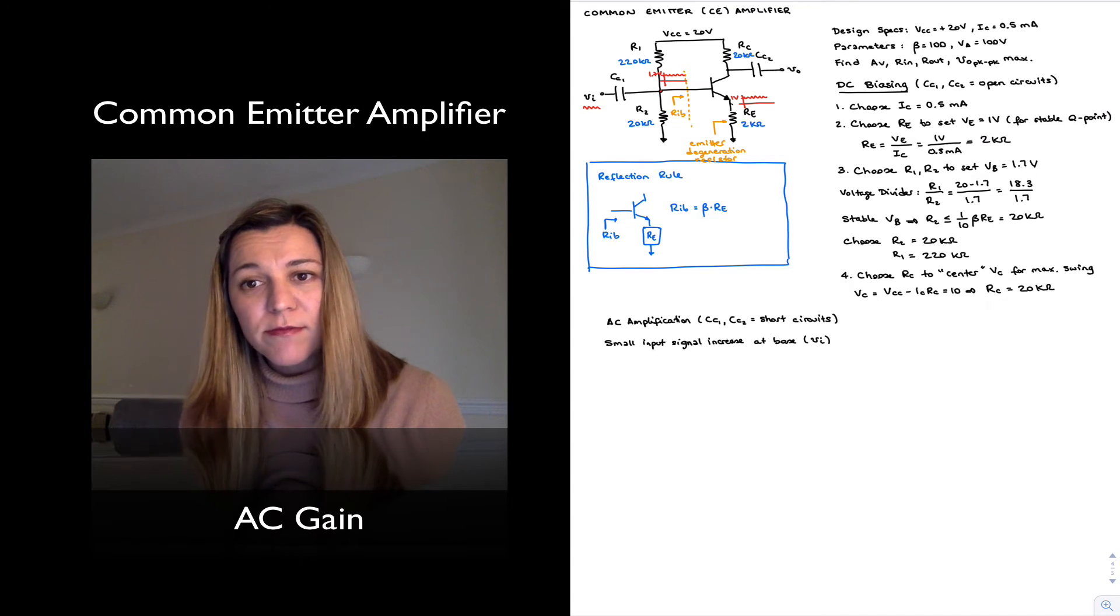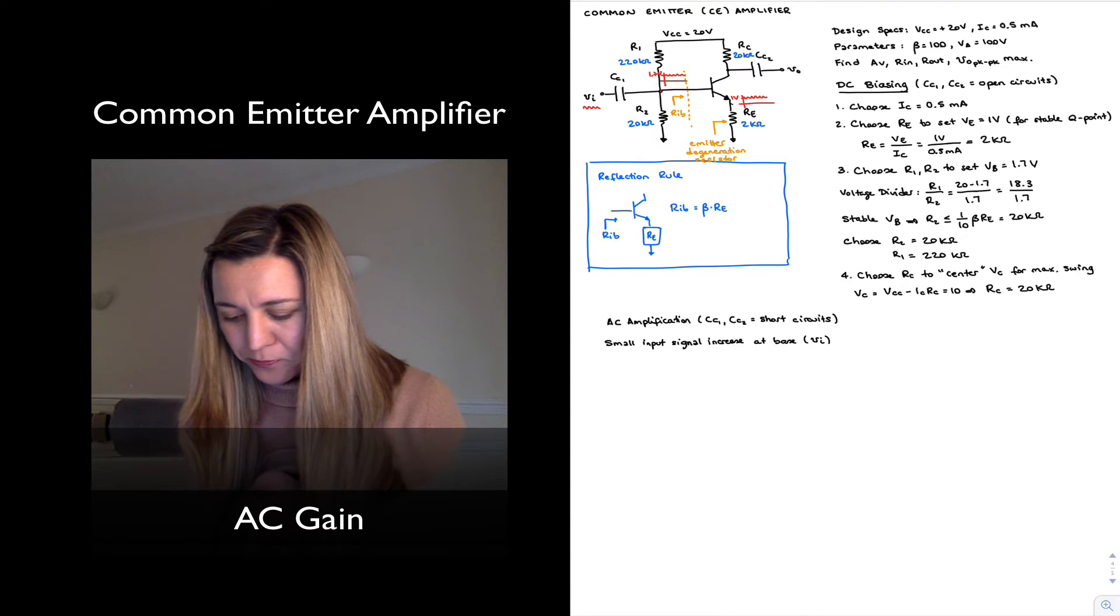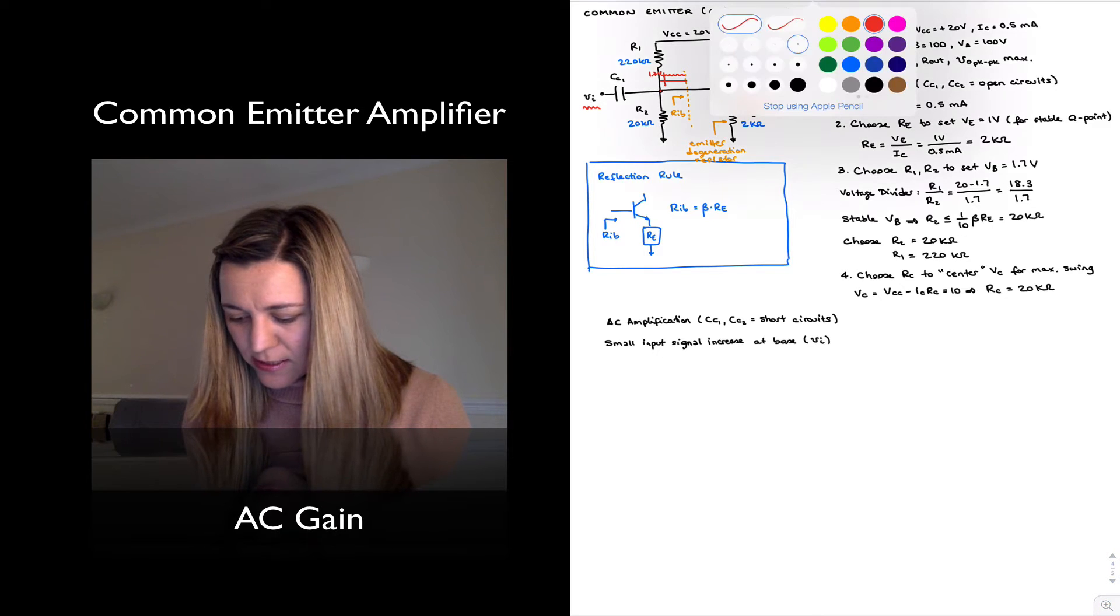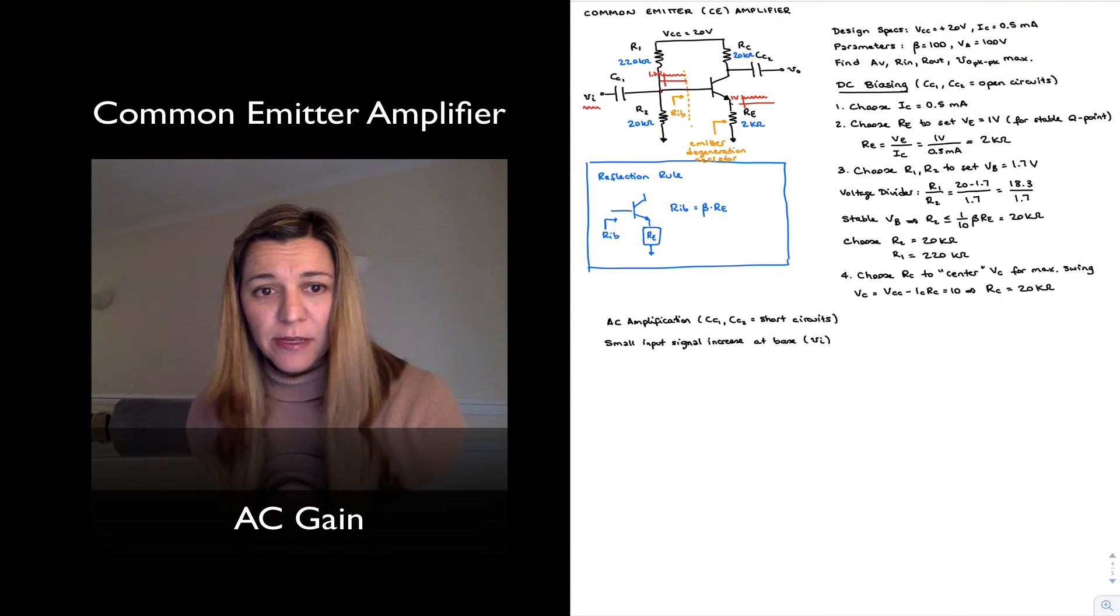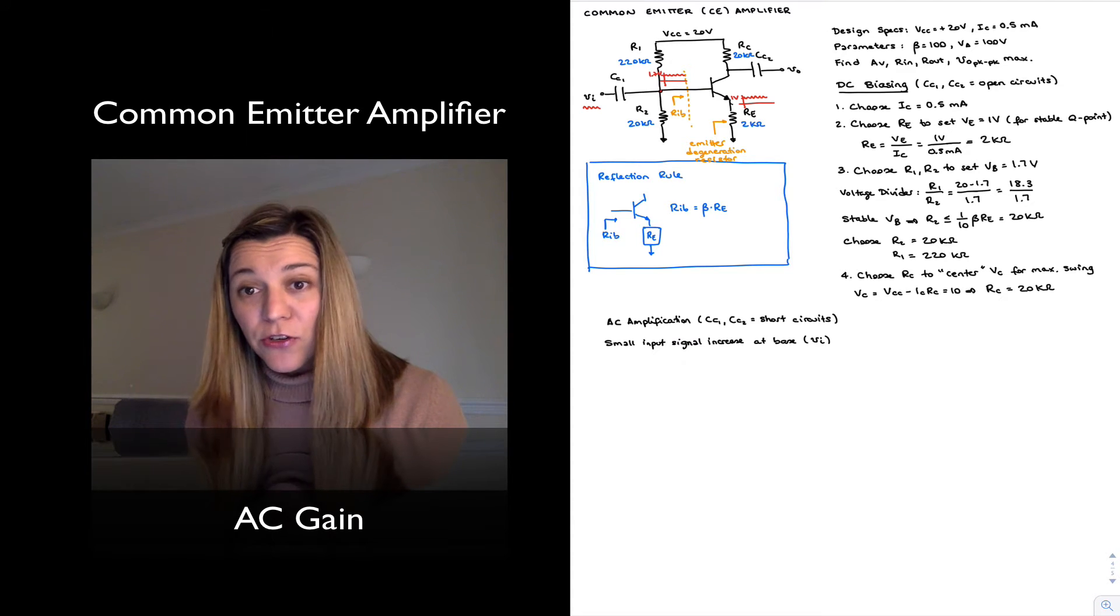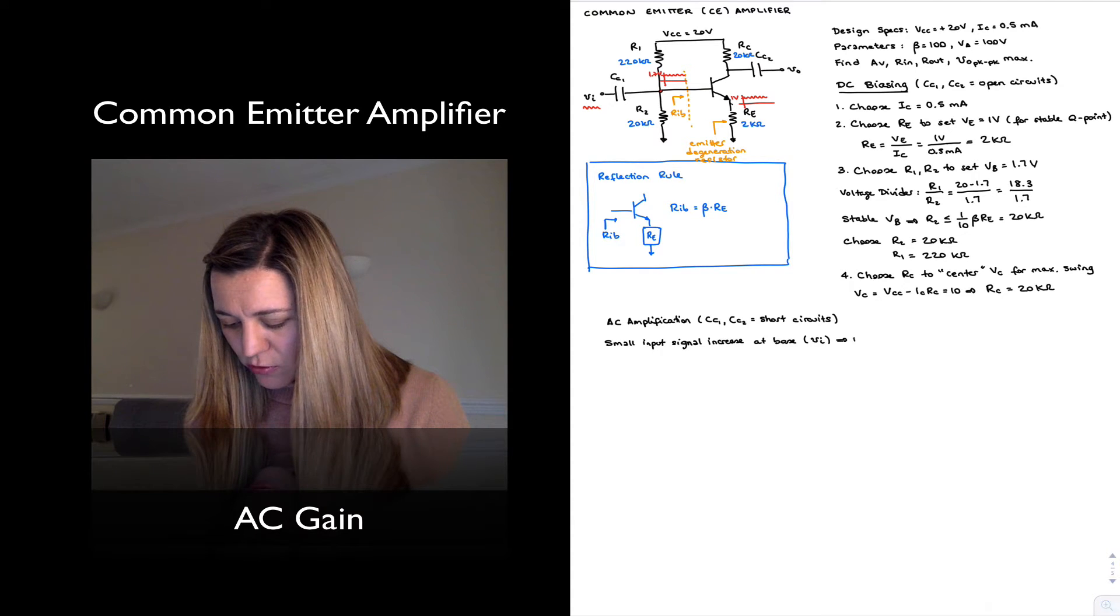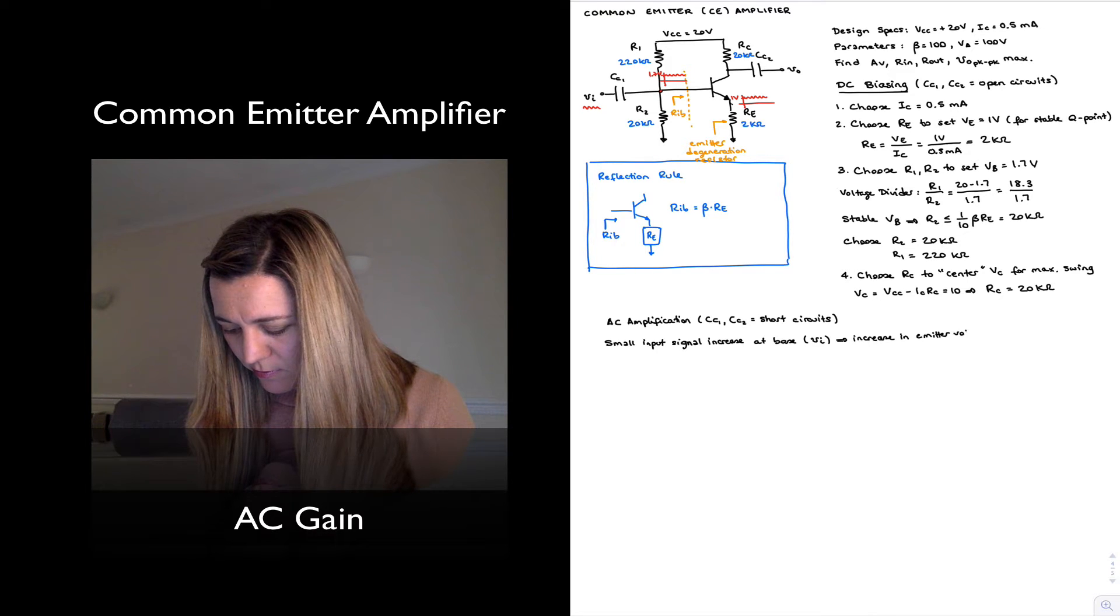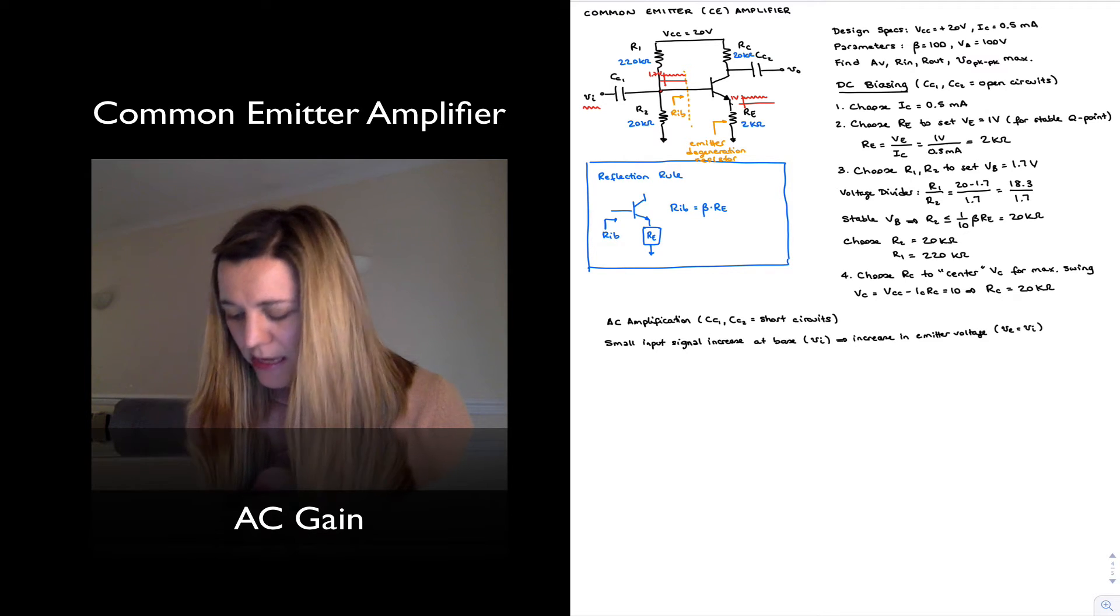That same little wiggle, same small signal. Let's go ahead and write this down so that we don't lose track of this. So a small input signal increase at base is going to cause an increase in emitter voltage of the same magnitude. So it causes increase equals VIN.